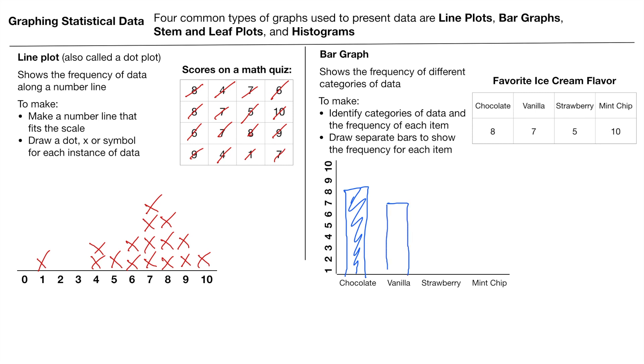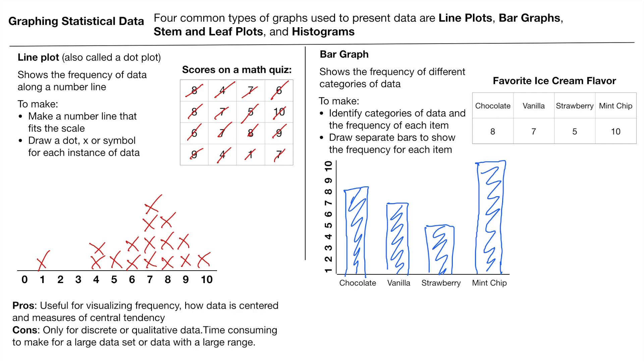Again, this is really important that the bars are not touching. Strawberry, we have five. And then mint chip, we have 10. Okay, so not the most perfect graph, but you can see bar graph right there. We're showing the frequency. Very common to look at. Very easy to understand.